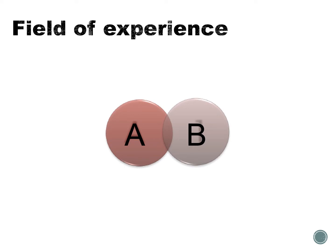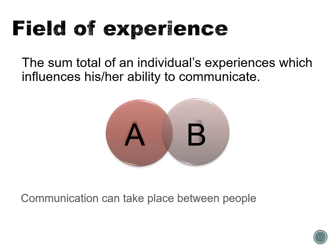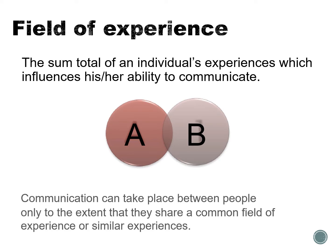When we enter a communication situation, we assume that we have something in common with the other person to begin with — a common language and common symbols whose meanings we share. Field of experience is the sum total of an individual's experiences, which influences his or her ability to communicate. Communication can take place only to the extent that people share a common field of experience. In this figure, we have person A and person B, and the parts of their circles that intersect represent their common field of experience — where communication can take place.